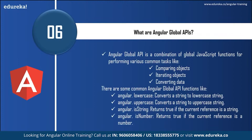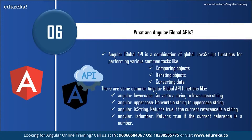Next: what are Angular global APIs? Angular global API is a combination of global JavaScript functions for performing various common tasks like comparing objects, iterating objects, and converting objects. Some common Angular global API functions include: Angular lowercase, which converts a string to a lowercase string; Angular isString, which returns true if the current reference is a string; and Angular isNumber, which returns true if the current reference is a number.